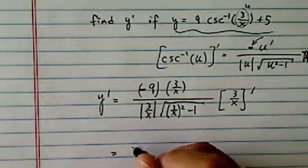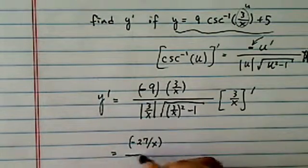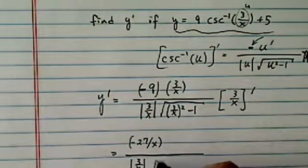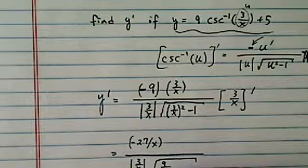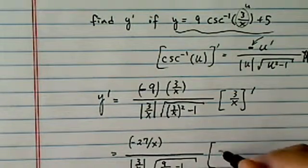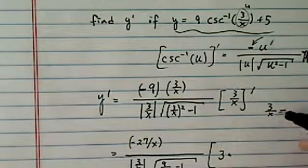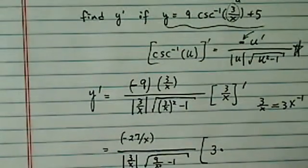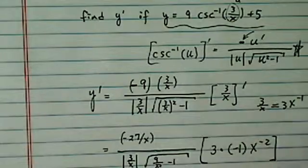Let's simplify it a little bit. So I have minus 27 over x. Absolute value of 3 over x. This one is going to be 9 over x squared minus 1. The derivative of this one is 3 times 3 over x. Let's treat it as 3 to the minus 1. And then 3 times minus 1, x to the minus 2.